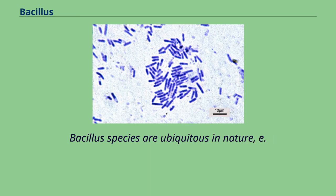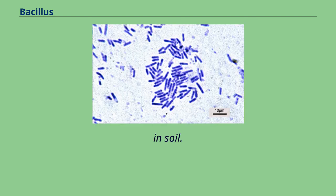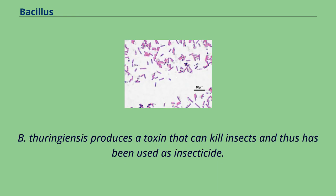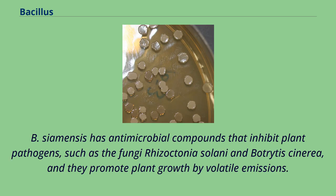Bacillus species are ubiquitous in nature, e.g., in soil. They can occur in extreme environments such as high pH, high temperature, and high salt concentrations. B. thuringiensis produces a toxin that can kill insects and thus has been used as an insecticide. B. amyloliquefaciens has antimicrobial compounds that inhibit plant pathogens, such as the fungi Rhizoctonia solani and Botrytis cinerea, and they promote plant growth by volatile emissions.